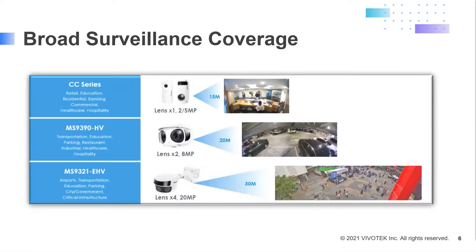The CC series is great for indoor and outdoor areas with a weather and vandal proof enclosure, ideal for retail, education, residential, healthcare, and hospitality. The MS9390 is also weather and vandal proof, ideal for parking, transportation, education, restaurants, healthcare, and industrial applications. Our four-lens MS9321 is perfect for wide open areas like airports, seaports, stadiums, city surveillance, large open parking areas, government buildings, and shopping centers.